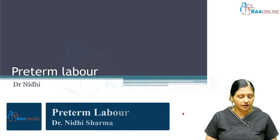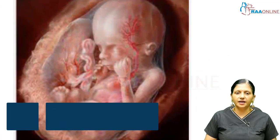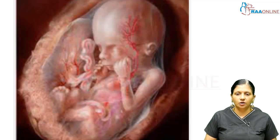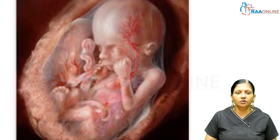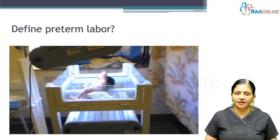Welcome to RAW Online. Today's topic is preterm labor. This is a concern because prematurity accounts for 70% of fetal and neonatal deaths in fetuses born without congenital malformations. So of the babies who are born normal without malformations, the number one cause of death is prematurity or preterm labor.